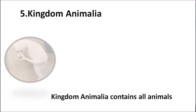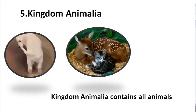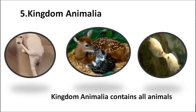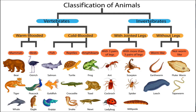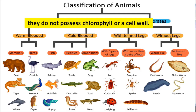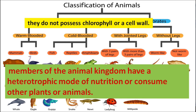The fifth kingdom is Animalia. Kingdom Animalia contains all animals. They do not possess chlorophyll or a cell wall in their cells. Members of the animal kingdom have a heterotrophic mode of nutrition and consume other plants or animals.